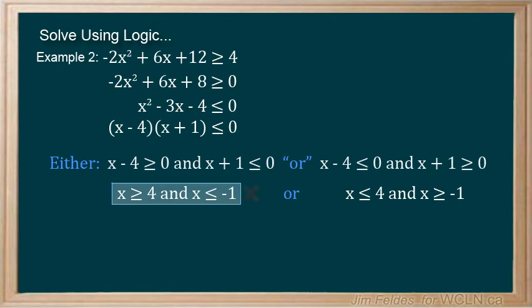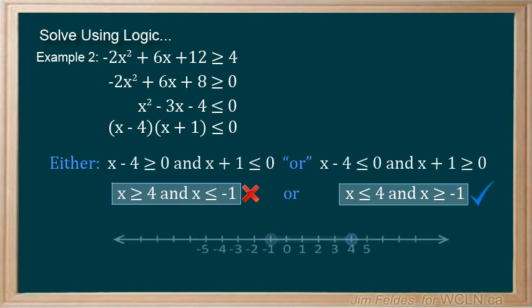X can't be greater than or equal to 4 and less than or equal to negative 1 at the same time. So no values satisfy this pair. The second pair of restrictions gives us the solution, shown on the graph as a closed interval, and also in interval notation.